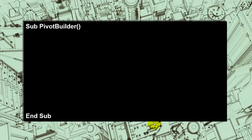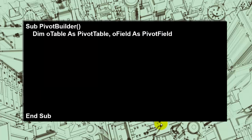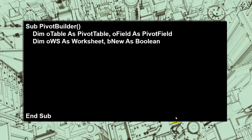Let's start our VBA code. I call the sub or the macro the pivot table builder, and we declare two variables that are pivot related: a pivot table variable and a pivot field variable. Then we need a worksheet variable and also a boolean variable that allows us later on to see whether we chose yes or no.